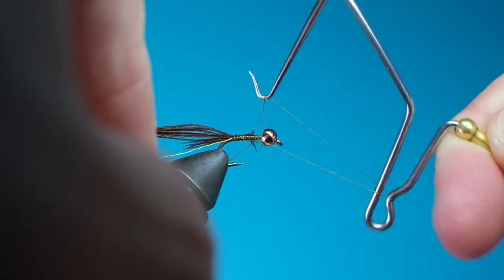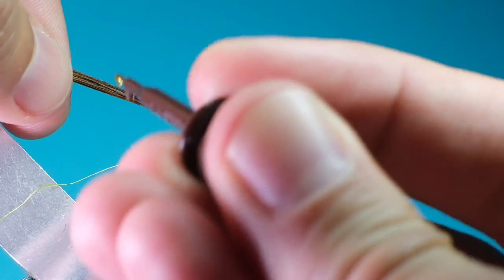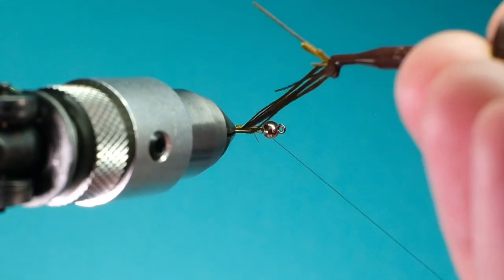Now do a whip finish to lock everything in place so you can get your thread onto the bobbin holder and out of the way. Using the rotary function of your vise will allow you to quickly wrap the feathers around the shank of the hook in nice, even wraps.